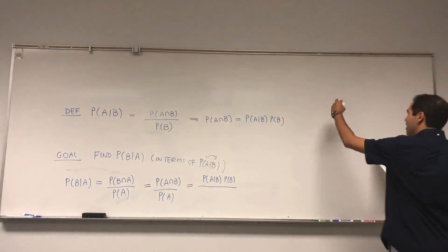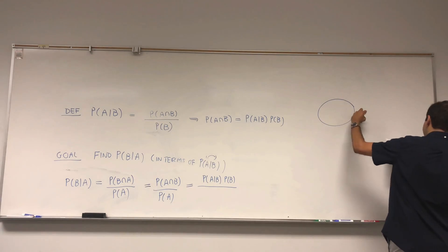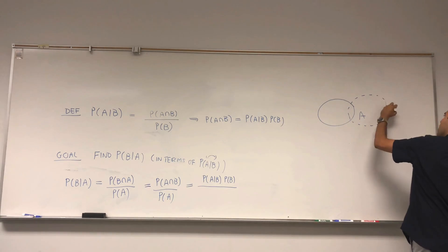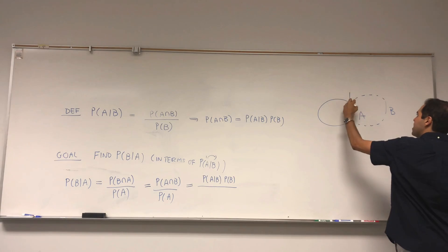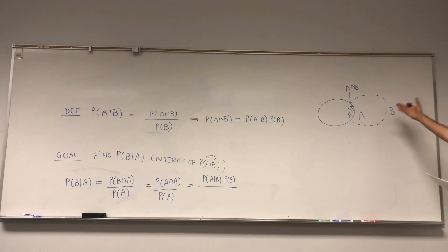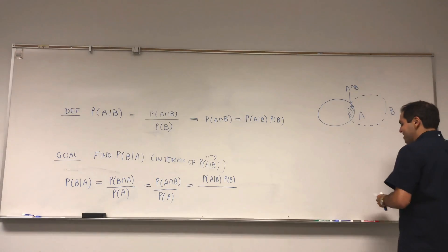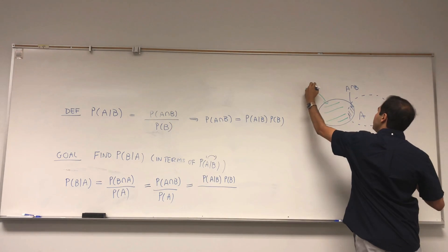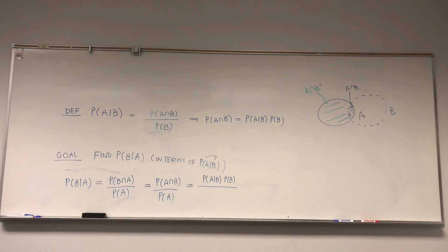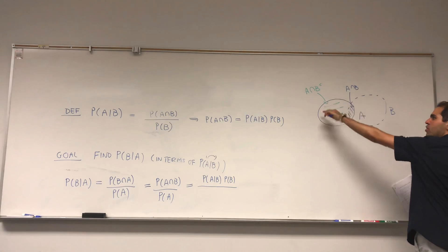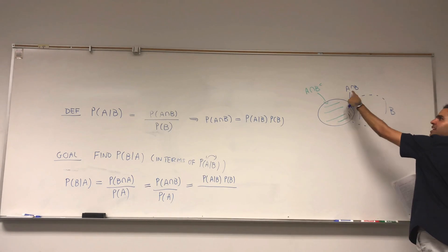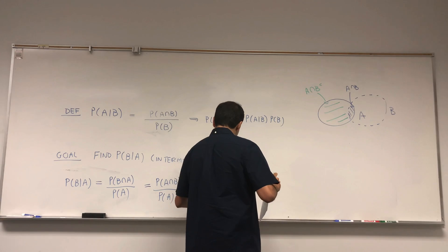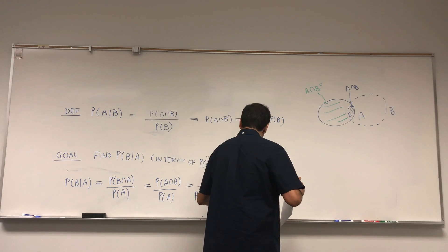Now let's see what the denominator becomes. Notice you can divide up the set A into two things. A is the same as A intersect B — everything in A that is in B — and everything in A that is not in B, that is A minus B, or A intersect B complement. So in particular, the probability of A equals the probability of A intersect B plus the probability of A intersect B complement.